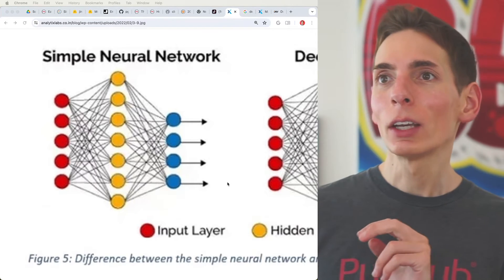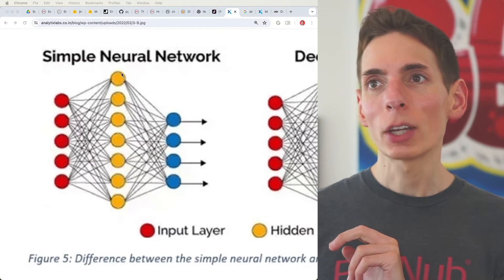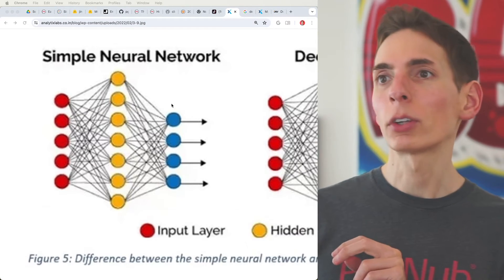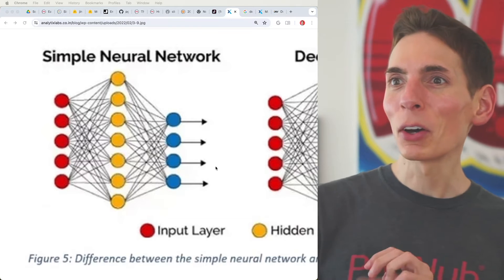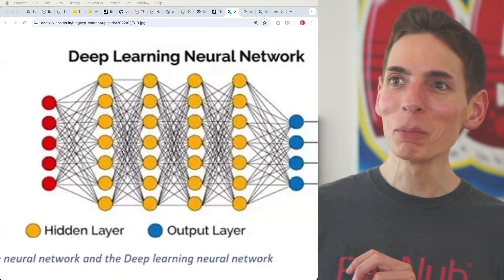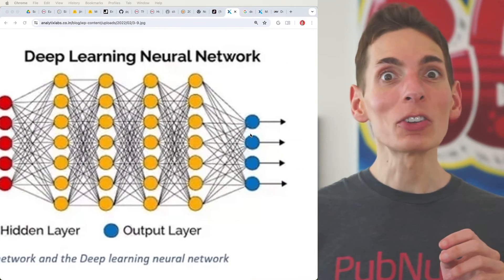What we're looking at here on the screen is the simple neural network, which has three matrices. You've got the input matrix, the middle matrix, and an output matrix. What makes it deep though is adding more into the middle. You can add more layers, and now it's deep learning.